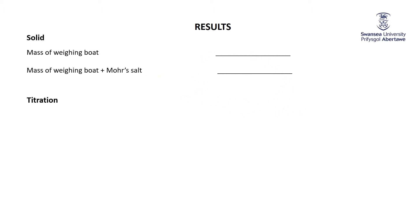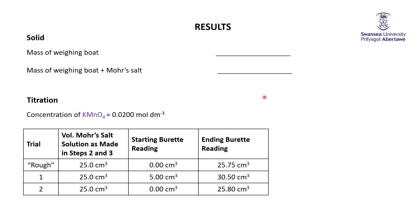For my titration, the KMnO4 solution was 0.0200 moles per cubic decimeter, so that's good within three significant figures. And then my rough titration here, I took 25 cubic centimeters of the Mohr's salt solution.